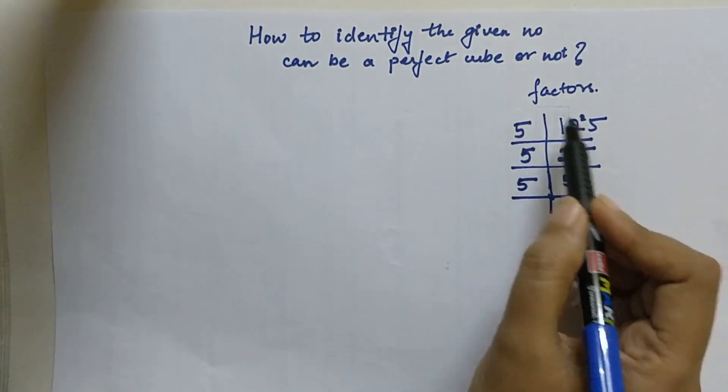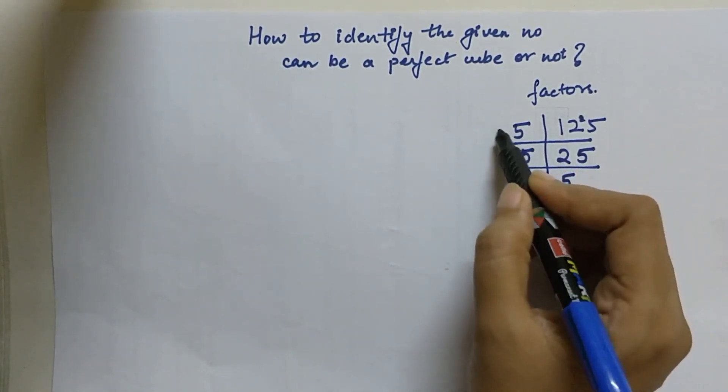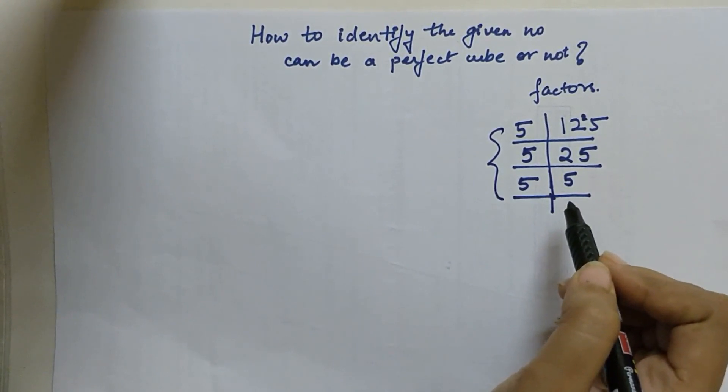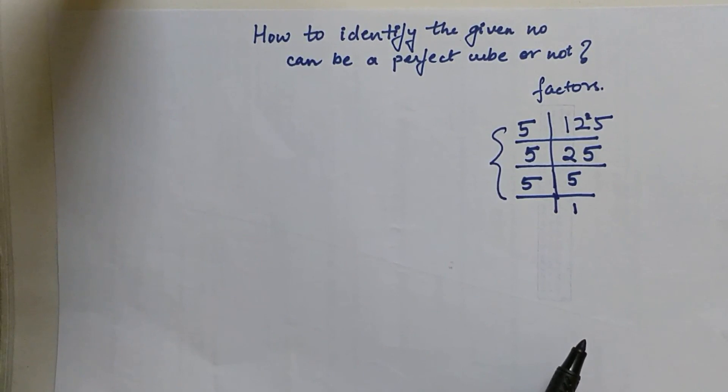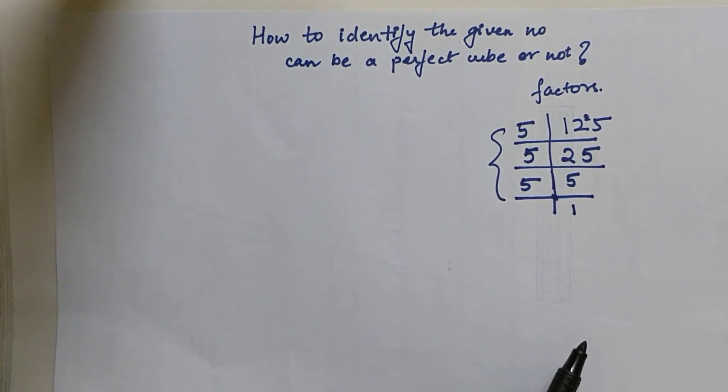Since we want to check whether the given number can be a perfect cube or not, we will club all of these factors in a batch of 3. But this is a very small number. In case if you have been given a bigger number, then how will you find out whether the number can be a perfect cube or not?